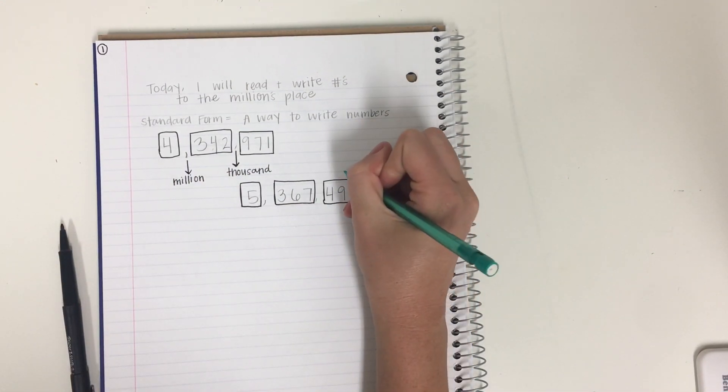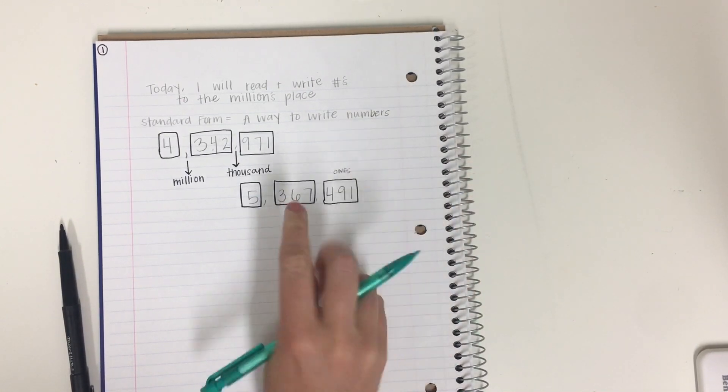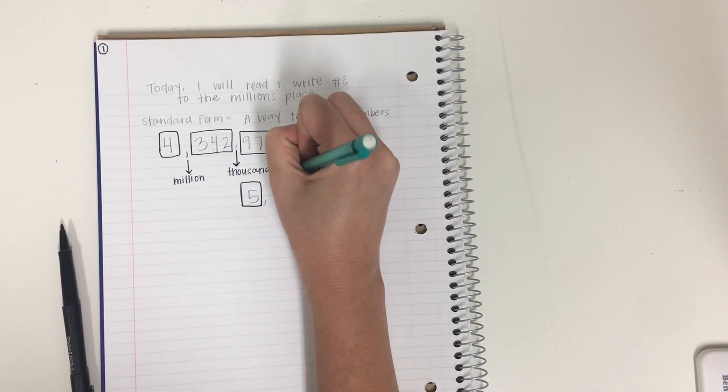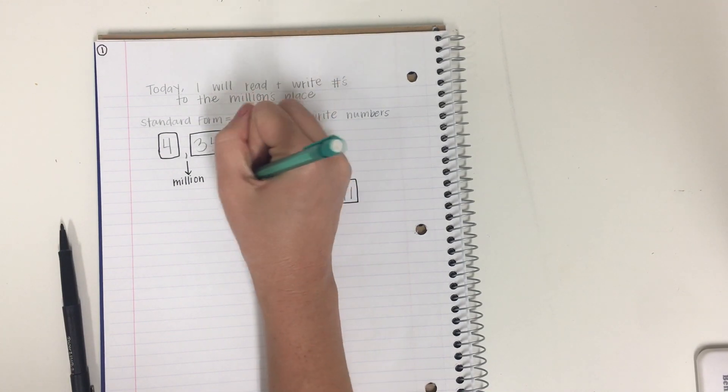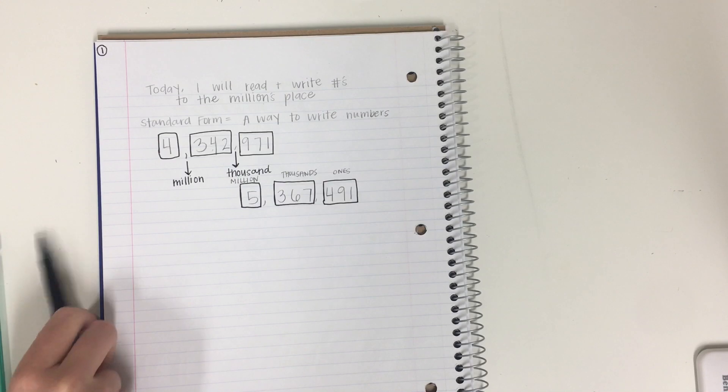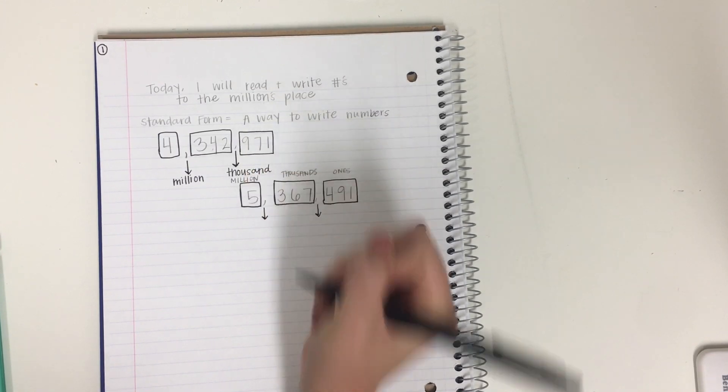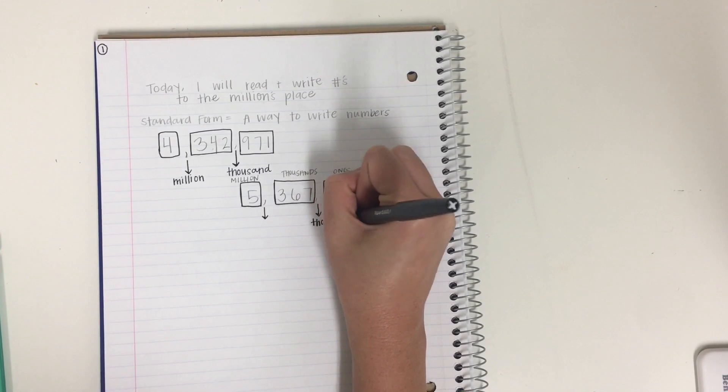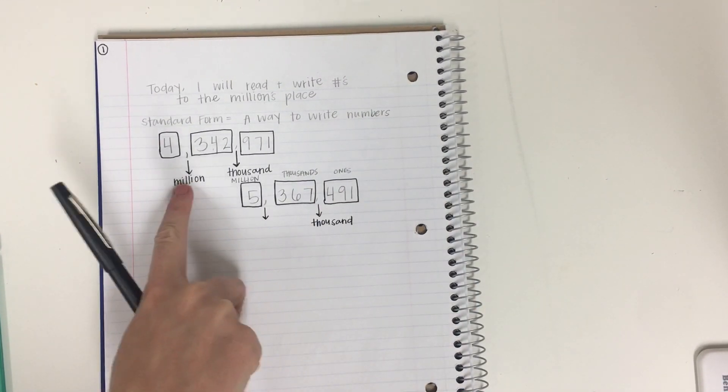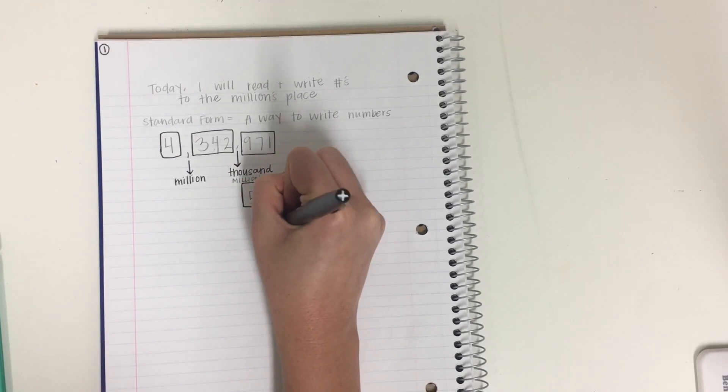So this is the ones period. So you can write ones. This box stands for thousands period. And this one stands for million, which can also help us with the commas. So I want you to draw your arrows and write the words. So we have our thousands place coming up. Thousand. And then we have our millions period here.